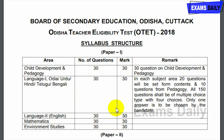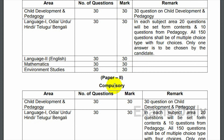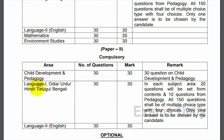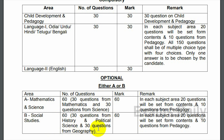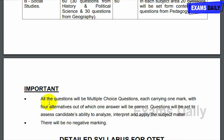For Paper 2, the compulsory areas are Child Development and Pedagogy, Language 1 (Odia, Urdu, Hindi, Telugu, or Bengali), and Language 2 (English) — 30 questions and 30 marks each. The optional section is either Part A: Mathematics and Science (60 questions total — 30 from Mathematics and 30 from Science, 60 marks), or Part B: Social Studies (60 questions — 30 from History and Political Science, 30 from Geography, 60 marks).